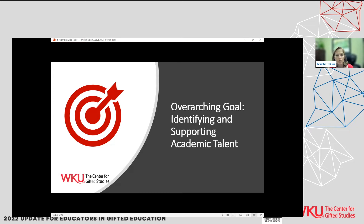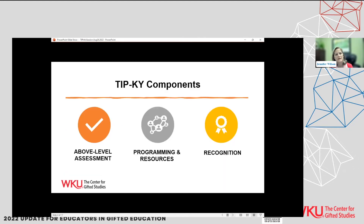Our overarching goal is identifying and supporting academic talent — that's what it has always been. When Duke TIP closed off the testing opportunity, we decided to go with another opportunity. The three main components for the talent identification program include above-level testing, which ties in really nicely with all of our existing programming that the center has done for decades, as well as many resources at the center and at the statewide level.